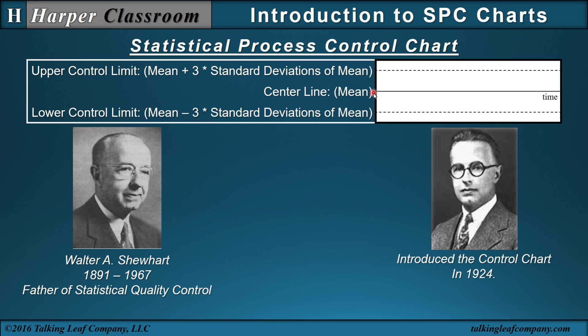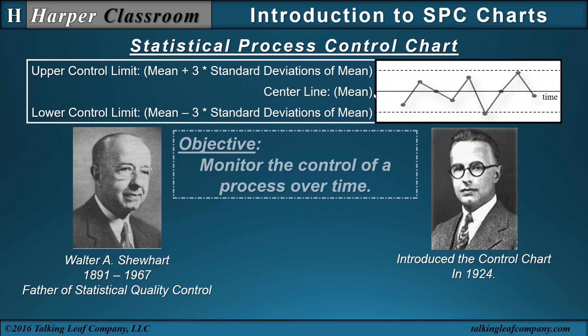The objective of a process control chart is to monitor the control of a process over time by measuring the quality characteristic over time.